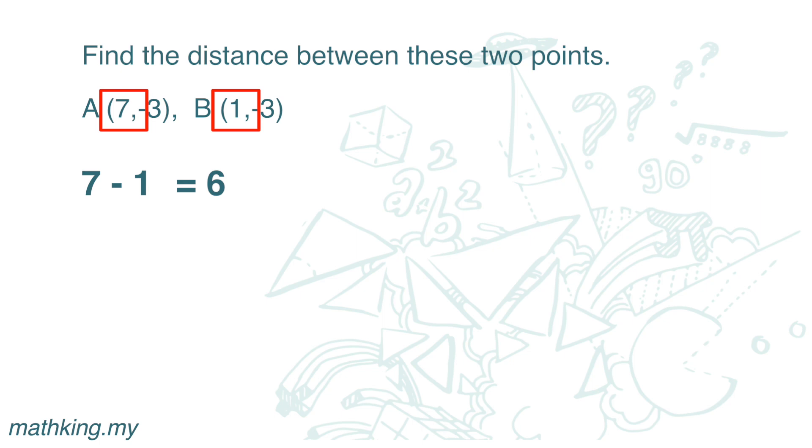Or we can plot the point on Cartesian plane. Here is point A, 7, negative 3. Here is point B, 1, negative 3. So the distance is 6 units.